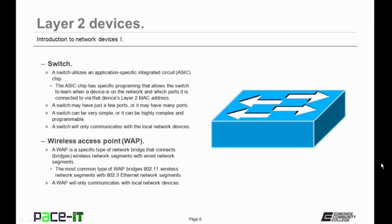A switch may have just a few ports or it may have many ports, kind of like the hub. Although a switch is smarter than a hub, it can still be very simple, or it can be highly complex and programmable. A switch can only communicate with local network devices.